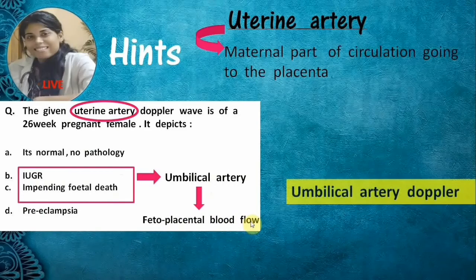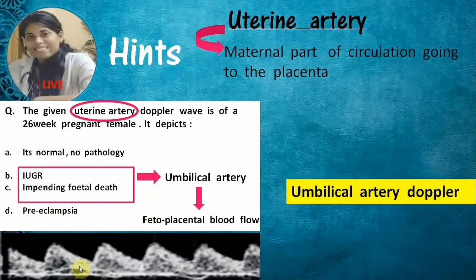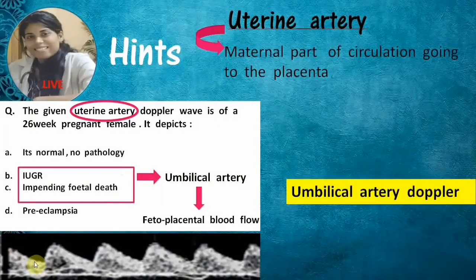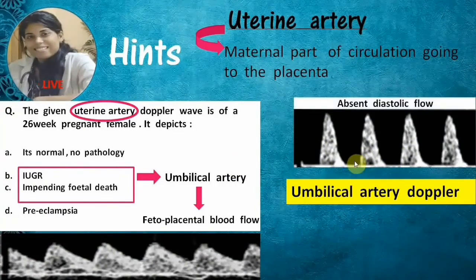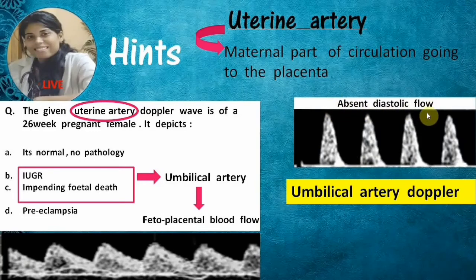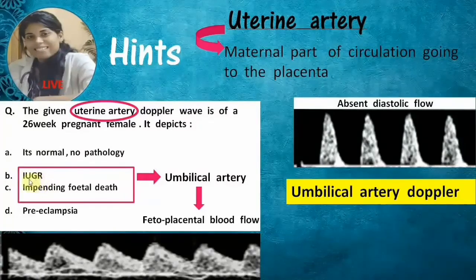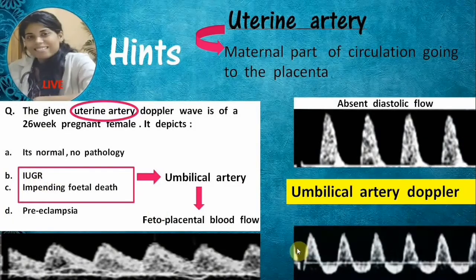This is the normal umbilical artery Doppler showing good flow in both systole and diastole. In this next umbilical artery Doppler waveform, there is absent flow in the diastole — absent diastolic flow indicates high resistance. The fetus is not getting an adequate amount of blood and won't develop adequately, leading to IUGR.